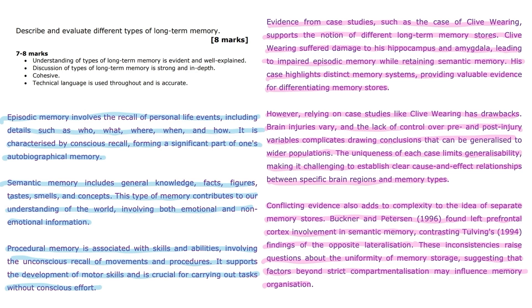AO1 material can be seen highlighted in blue and AO3 material highlighted in pink. The understanding of types of long-term memory is clear and well explained. The response provides clear definitions and characteristics of episodic, semantic, and procedural memory. Each type is outlined concisely and shows a strong grasp of the subject, clearly exploring each memory type and providing additional details that go beyond just a definition.